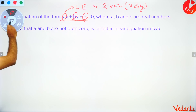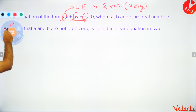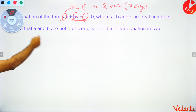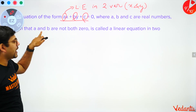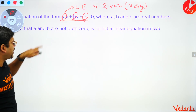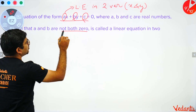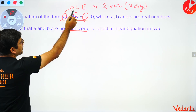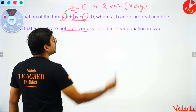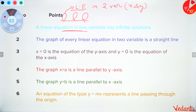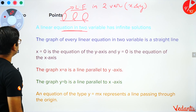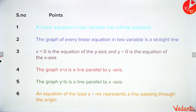An important constraint: a and b are not equal to zero. If they become zero, the equation will no longer be a linear equation in two variables. So a, b, and c are simply constants, with a and b being non-zero.